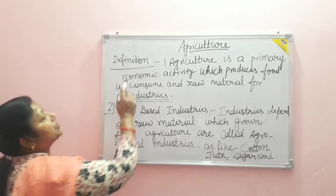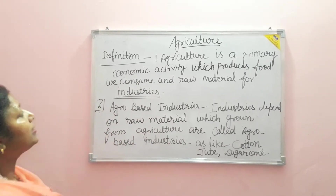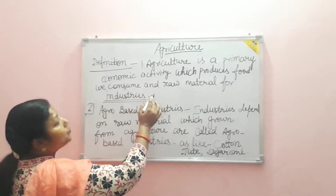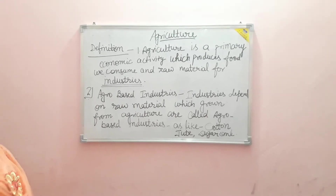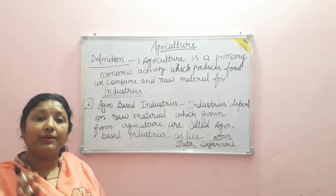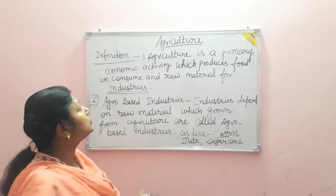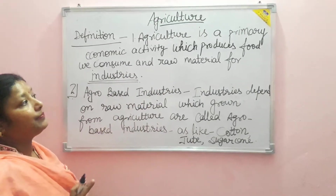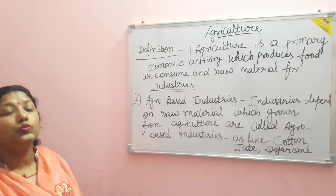The definition of agriculture is: it is a primary economic activity which produces food we consume and raw materials for industries. Agriculture is a primary activity. The three activities are divided by economic sectors. Agriculture is what we consume and eat.